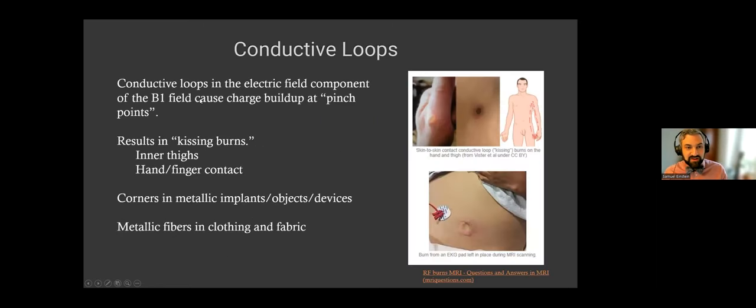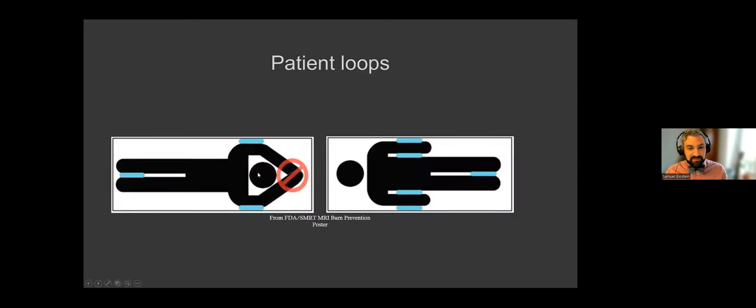Conductive loops in the electric field of the B1 cause a charge buildup at pinch points. So you see some pictures here, but you can see kind of on the diagram here we have a pinch point. So there's current that's generated by these RF fields and it's flowing through the patient. And if there's just a tiny point of contact, all that current gets pushed into a very tiny area and then it becomes substantial enough to cause the burn. You actually don't have problems if you have like large areas of contact. The problem is more the small areas of contact. You're kind of concentrating all that current into a small place. And so we see these right where patients are potentially touching themselves. Inner thighs are a very common point. Also the hand or finger contact. We also see these corners in metallic implants, objects or devices. They can concentrate the current as well or metallic fibers in clothing and fabric.